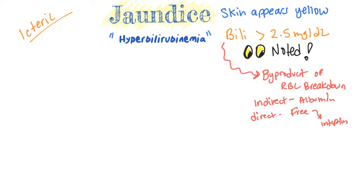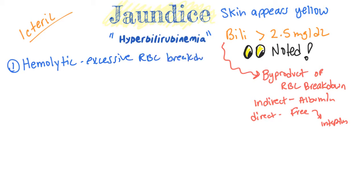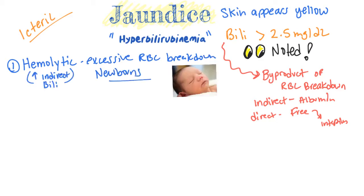There are three types of jaundice. The first one is hemolytic. Hemolytic jaundice is when there is excessive red blood cell breakdown, and that would be an indicator of a high indirect bilirubin. This is mainly present in newborn babies. Newborn baby jaundice is very common, and it's because of the birth process and the red blood cells that are being destroyed during the birthing process.